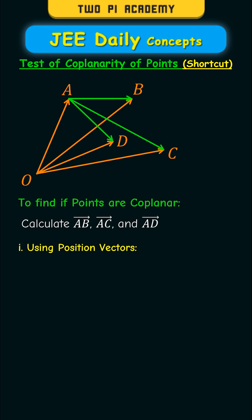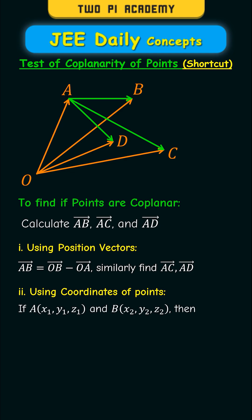To calculate them, you can either use the position vectors—vector AB is equal to vector OB minus vector OA, and similarly find the remaining—or you can use the coordinates of the points. If you are given the coordinates of two points, then to find the vector from one point to another, you have to take the difference of the coordinates.